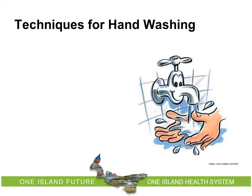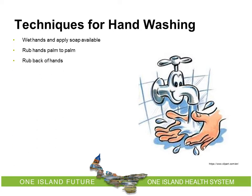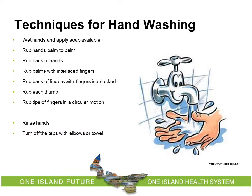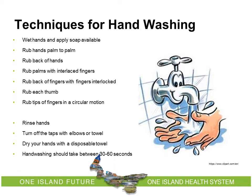Techniques for hand washing: Begin by wetting your hands and applying soap. Rub your hands palm to palm, then rub the back of your hands, then rub your palms with fingers interlocked. Rub the back of your fingers with fingers interlocked. Rub each thumb thoroughly. Rub the tips of your fingers in a circular motion, then rub your wrists thoroughly. Rinse your hands and turn off the taps with your elbows or a disposable towel. Dry your hands well with a disposable towel. Hand washing should take between 30 and 60 seconds.